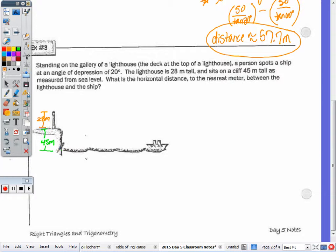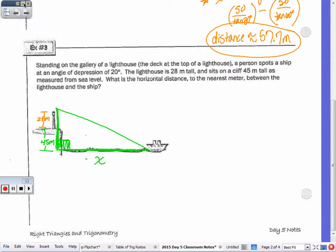What is the horizontal distance to the nearest meter between the lighthouse and the ship? So again, we can look at this triangle here. This distance, this is the horizontal distance, we can call that X. What would be this side of the triangle? So from the top, if I form a triangle here, this total distance is going to be what? For that side of the triangle. 28 and 45 is 73 meters. So 73 meters.